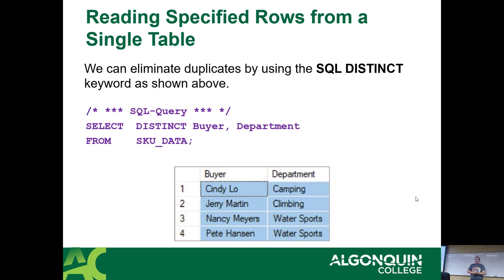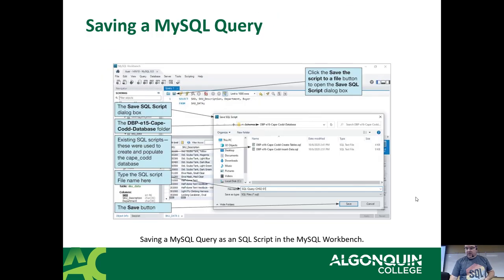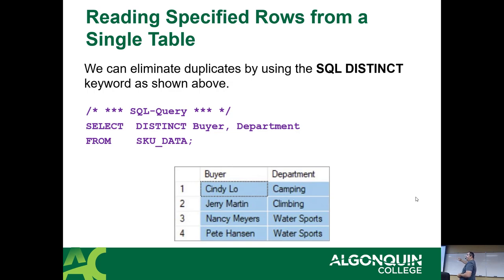The first magic keyword is DISTINCT. DISTINCT operates on the set of data being returned. So if you go SELECT DISTINCT buyer, department FROM SKU_data — looking back at the original results you'll see repeated rows: Pete Hanson, Water Sports; Nancy, Water Sports; Cindy Lou, Camping; Jerry at Climbing. What DISTINCT does is look at the full row of data. It looks at the complete collection of each column for each row and returns only unique combinations of columns. If it sees any repeats, it just drops them.